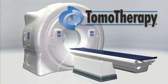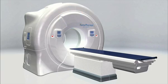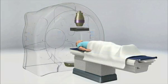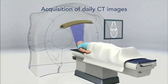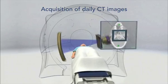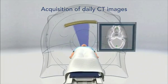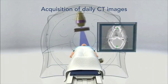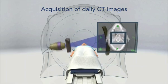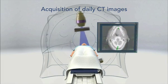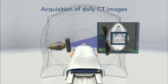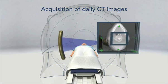The session begins with patient positioning, based on a 3D megavoltage CT image acquired from the same X-ray source that will later be used to treat the patient. As with a diagnostic CT scanner, our system uses a rotating narrow fan beam of X-rays where the source moves in a helical pattern around the patient.